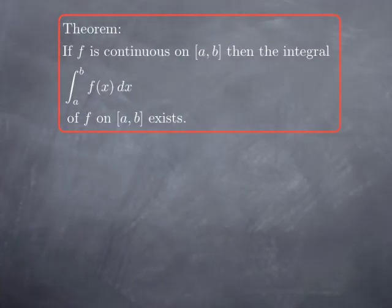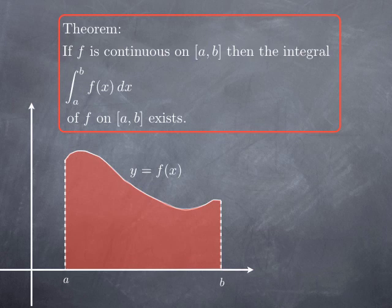All these definitions are provided that the limit exists, so we want to have some idea of when this limit exists — when the integral makes sense. We could get more general conditions, but something good enough for us, which we will not prove but admit: if the function is continuous on the closed interval, then its integral on that interval exists. Going back to our problem from the beginning — if I have a positive continuous function on a closed interval, I want to talk about the area under the graph. The theorem says, among other things, that in that case the area makes sense and exists.